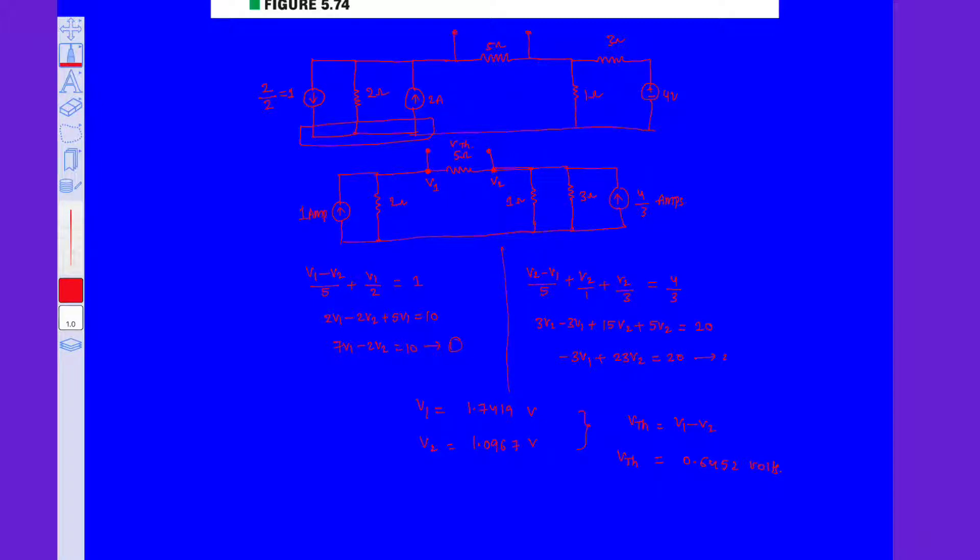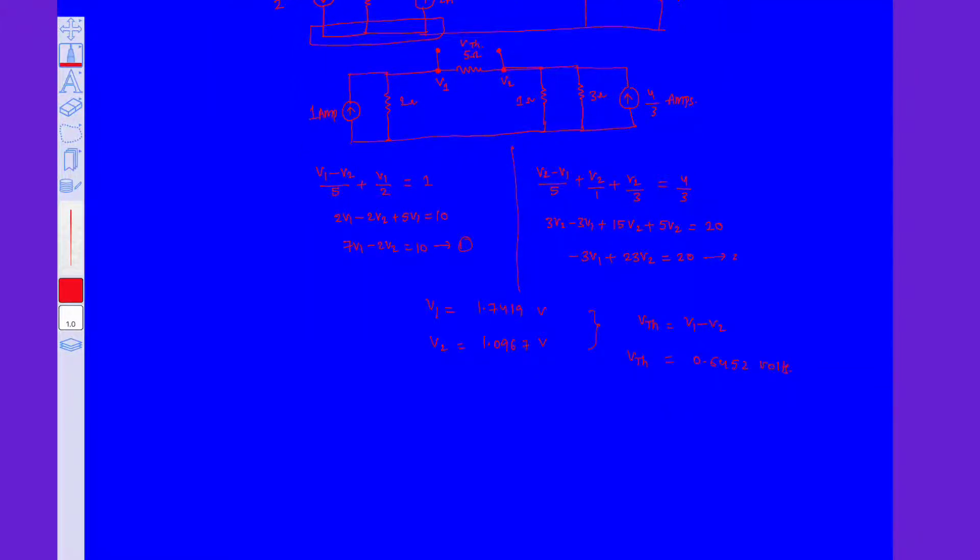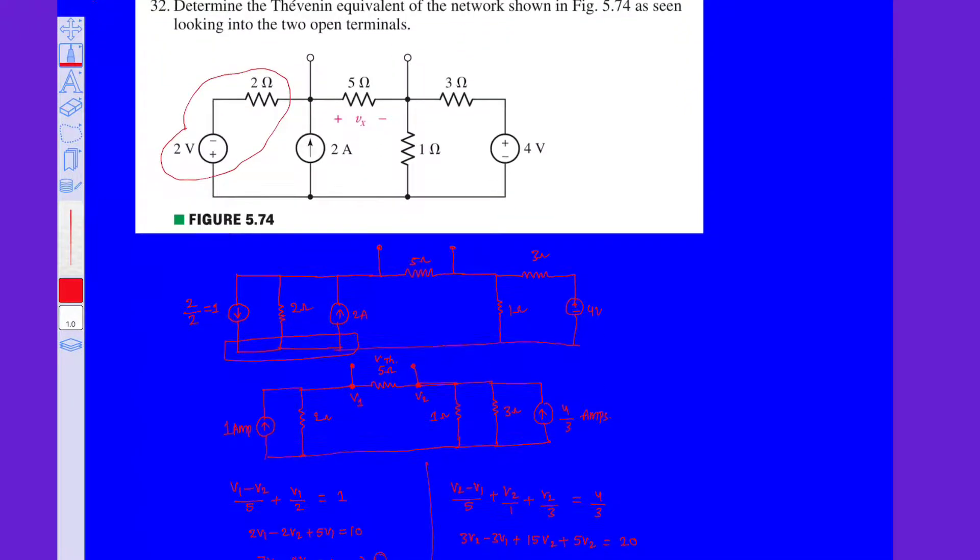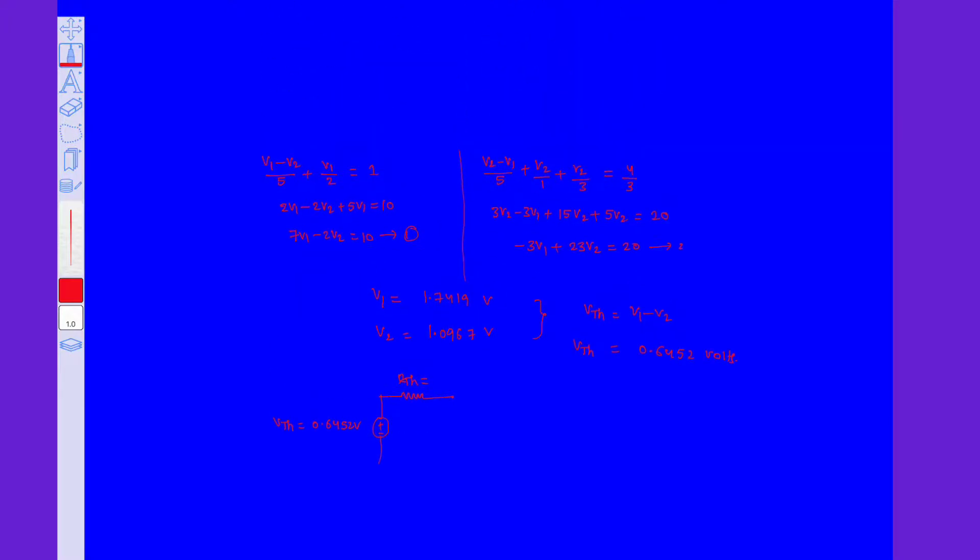That is it. This is the Thevenin equivalent with respect to the terminals given and we can draw the Thevenin equivalent circuit also. VTH equals 0.6452 volts in series with a resistance RTH equals to 1.774 ohms. These are the terminals. This is the required Thevenin equivalent circuit. Thank you.